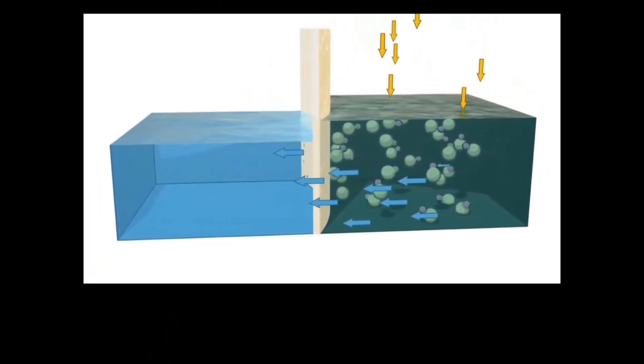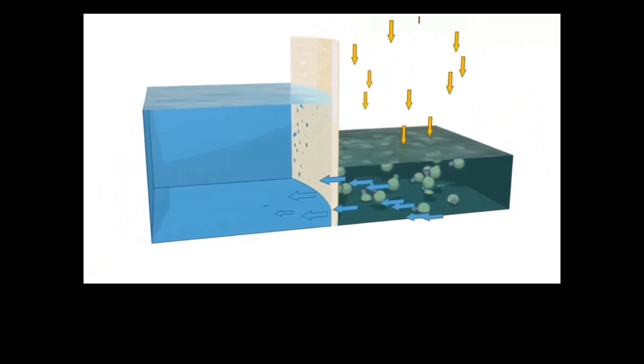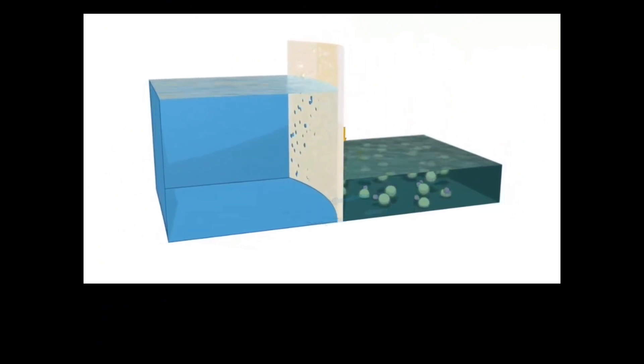Reverse osmosis is a type of filtration that uses a semi-permeable thin membrane with small pores for pure water to pass through, while rejecting larger molecules and other contaminants. It consists of filtration systems which remove dissolved ions from water. It is used to produce highly purified water for drinking water systems, industrial boilers, food and beverage processing. It is also used in cosmetic and pharmaceutical production and seawater desalination.